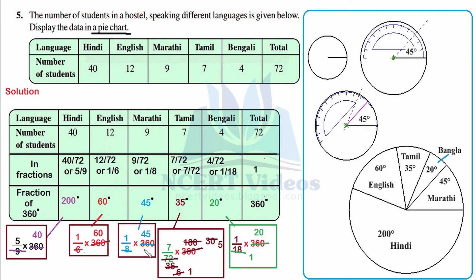For English, 1 over 6 multiplied by 360 gives 60 degrees. For Marathi, 1 over 8 multiplied by 360: 8 into 360 gives 45, so the sector angle is 45 degrees. For Tamil, 7 over 72 multiplied by 360: cancelling with 2 gives 7 over 36 multiplied by 180, which further simplifies to 7 times 5 equals 35 degrees.